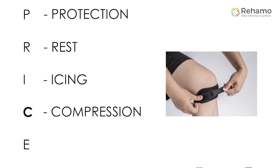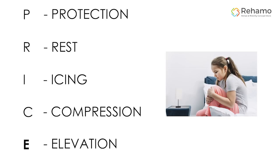C stands for Compression — compress the affected joint using an elastic wrap. Do not wrap too tightly, as this can reduce the blood supply. E stands for Elevation — elevate the affected joint above the level of your heart or parallel to the ground.